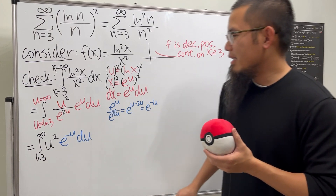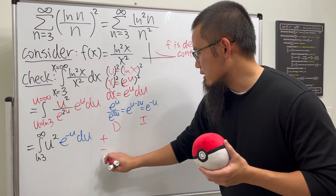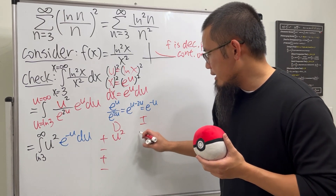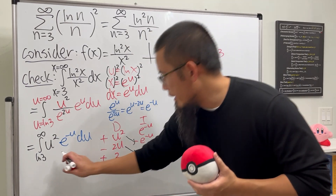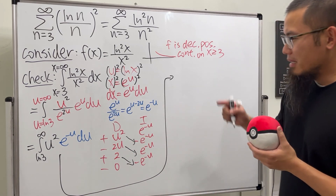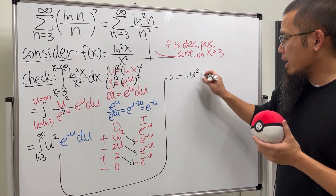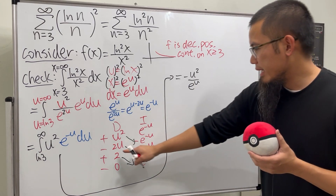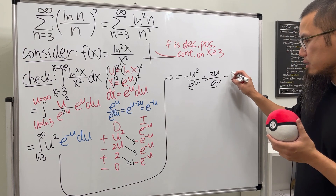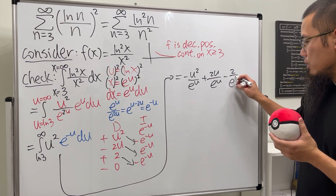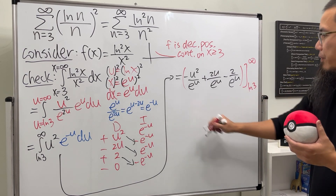Using the tabular method with plus-minus signs, we differentiate u² and integrate e^(-u). This gives: -u²/e^u + 2u/e^u - 2/e^u, evaluated from ln(3) to infinity.